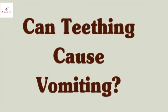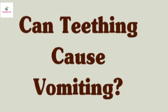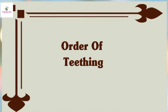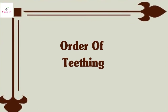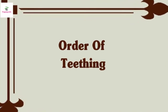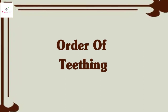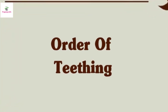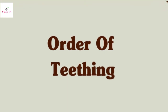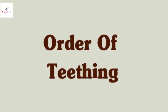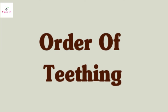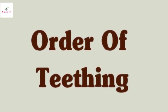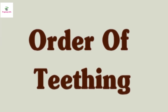Now we will discuss the order of teething, or order of teeth eruption: central incisors 6 to 12 months of age; lateral incisors 9 to 16 months of age; canines 16 to 23 months of age; first molars 13 to 19 months of age; second molars 22 to 24 months of age.